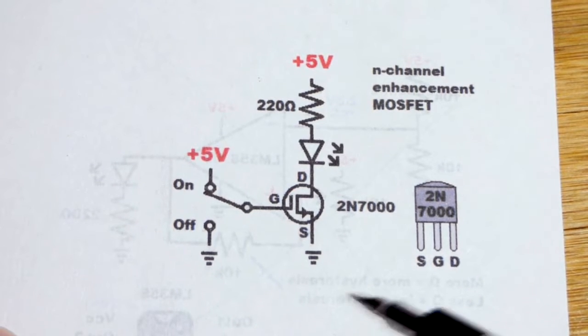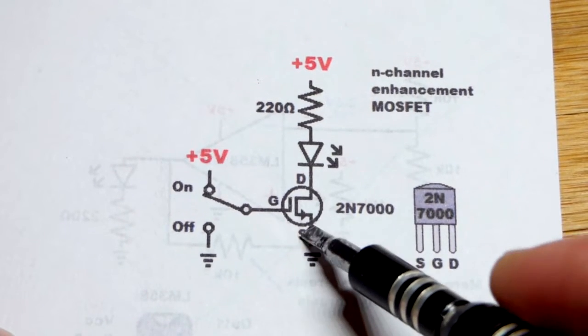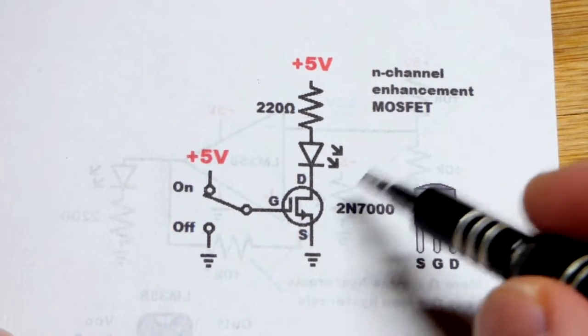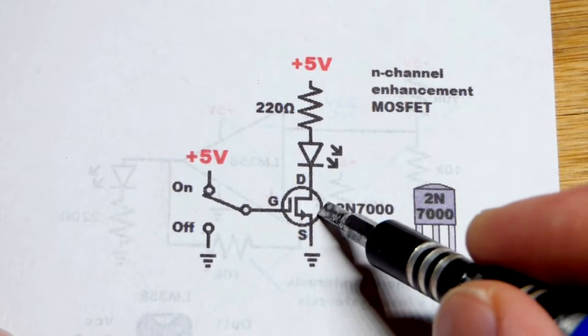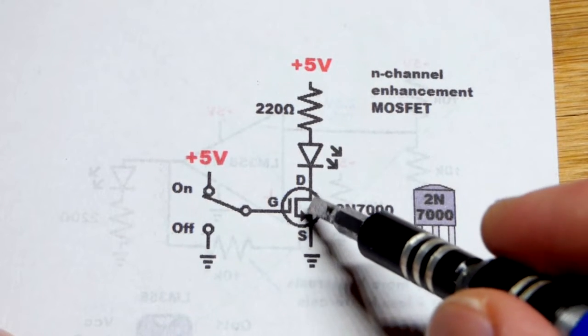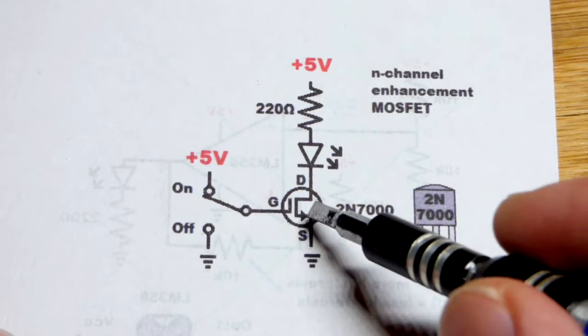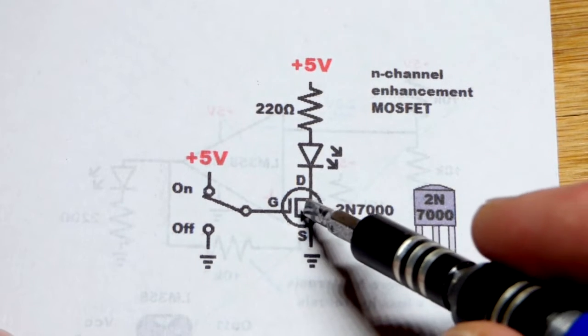And here is the schematic diagram. The schematic symbol, usually they won't have the letters there for the pin layout. Also, when it comes to MOSFETs and JFETs as well, the schematic symbols are not universal. So you'll see different versions. This is the one that I like here.